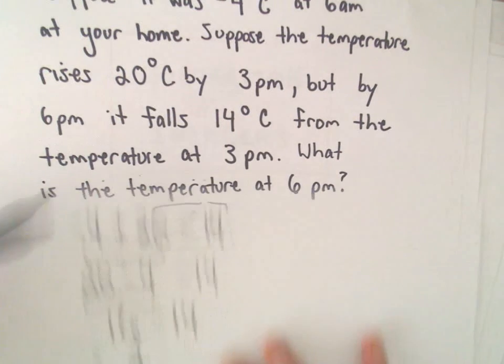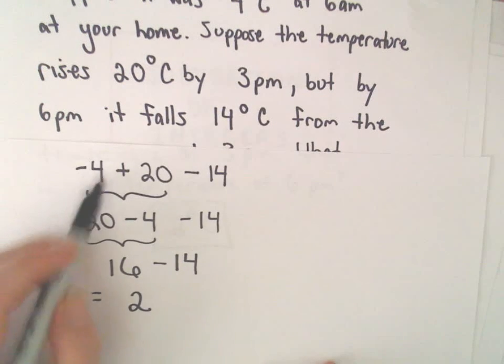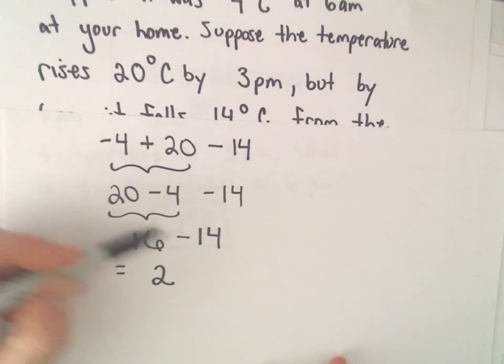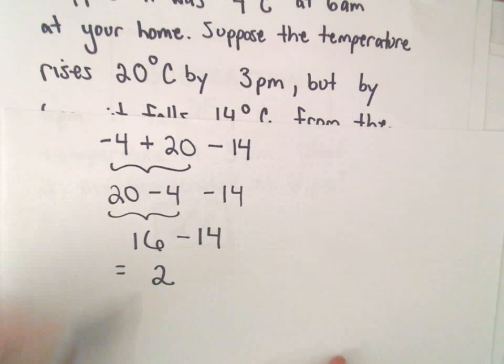So again, it increases from negative 4 degrees. If we add 20 degrees, that means at 3 p.m. it's 16 degrees Celsius. But then it drops by 14 degrees, so that's going to leave us with 2 degrees Celsius total.